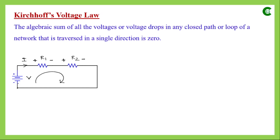When we are moving from the negative terminal to the positive terminal, basically we are gaining some potential. So moving from negative to positive will be taken as a positive voltage. That means through the resistors, when we are moving from higher potential to lower potential, those voltage drops will be taken as negative voltage values as per the convention we have assumed.